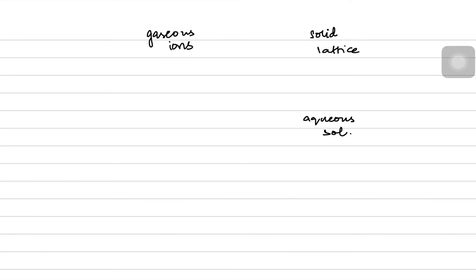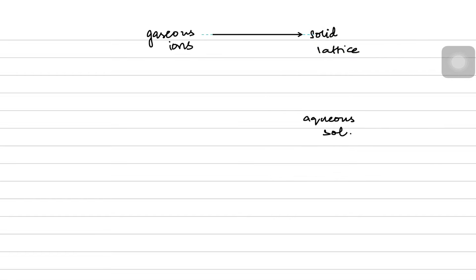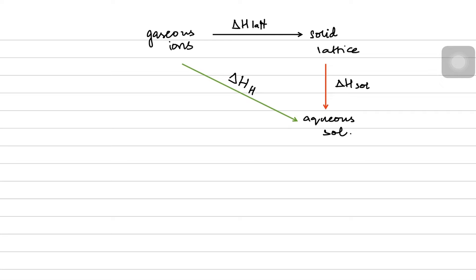Welcome back to another video by Cam Room 5. Previously we had been talking about solution, hydration, and lattice enthalpies. We concluded that when gaseous ions combine to form a solid lattice, it is known as lattice enthalpy. When that solid lattice dissolves in water to form an aqueous solution, we call it solution enthalpy. The direct method — dissolving gaseous ions straight into solution — is hydration.